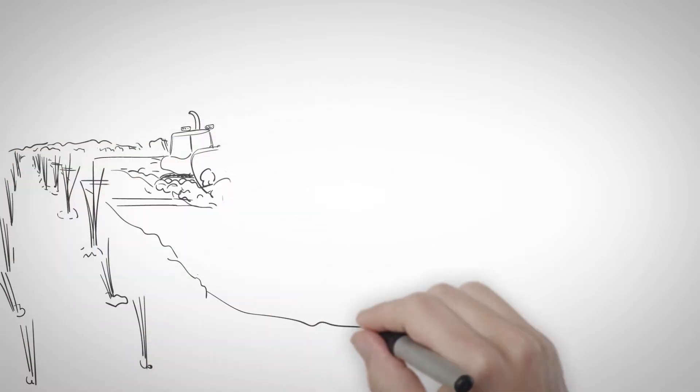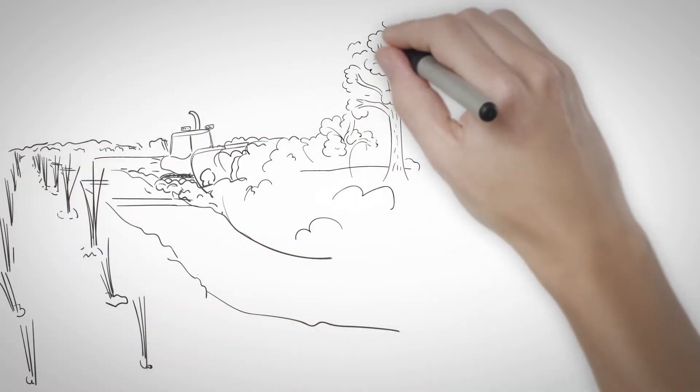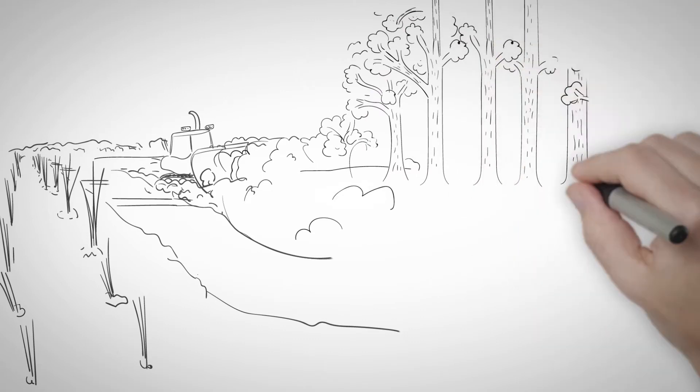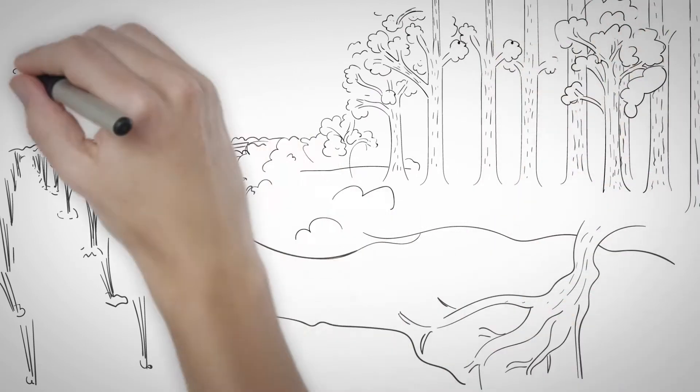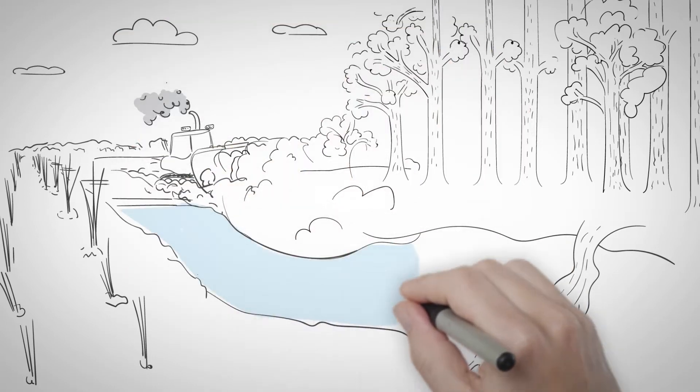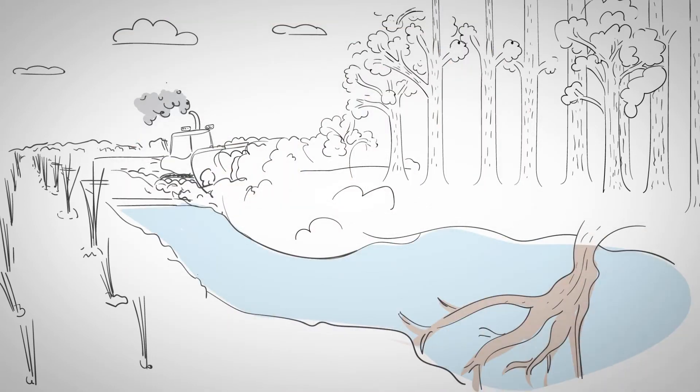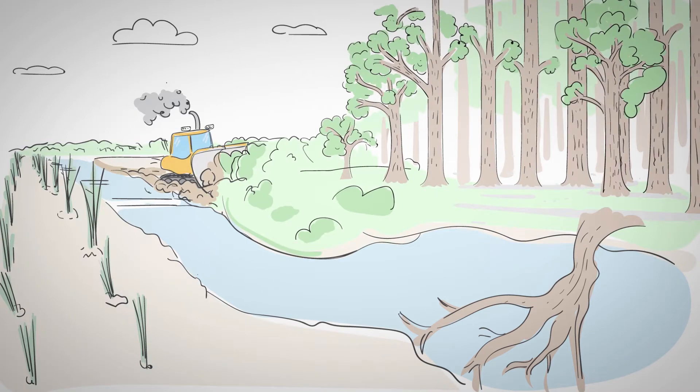Oil palm cultivation on peatlands in Southeast Asia started in the early 1960s. However, it was not very successful in the beginning due to major operational problems, especially when oil palm was cultivated on deep peat.